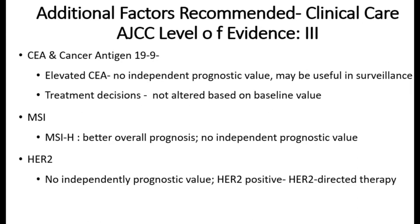Additional prognostic factors recommended in AJCC with evidence level 3 include CEA and CA 19-9. Elevated CEA has no independent prognostic value but may be useful in surveillance — if tumor marker levels are rising in the postoperative period, it is a signal for recurrence. However, treatment decisions are not affected by preoperative tumor markers. The microsatellite instability index, if high, gives better overall prognosis, but also has no independent prognostic value.